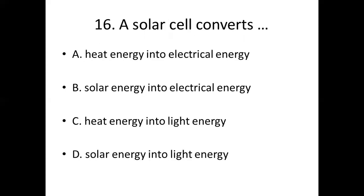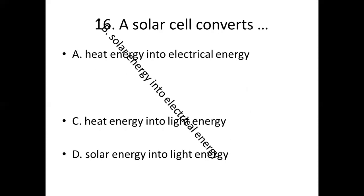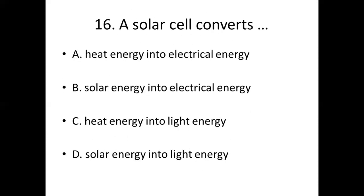Sixteenth bit. A solar cell converts: Option A, heat energy into electrical energy. Option B, solar energy into electrical energy. Option C, heat energy into light energy. Option D, solar energy into light energy. Answer: Option B, solar energy into electrical energy.